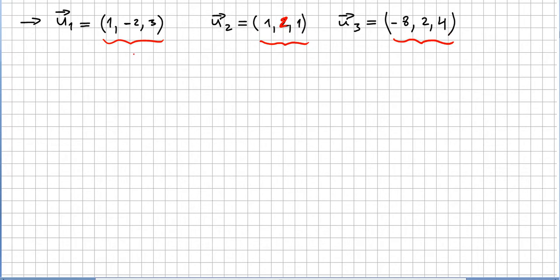And to check if they are orthogonal to u2, you simply compute u1 times u2. And check if u1 is orthogonal to u2. So that will be 1, minus 2, 3, right? Times 1, 2, 1, and that is 1,